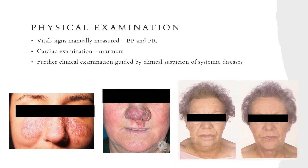Physical examination follows the same train of thought from history taking. I emphasize manually taking the vital signs, as ventricular ectopics can cause erroneous readings, which is factitious bradycardia. Clinical examination is often otherwise unyielding and should be guided by clinical suspicion of systemic diseases. The first picture on the left is a malar rash suggestive of systemic lupus erythematosus. The middle picture is lupus pernio suggestive of sarcoidosis. The last two pictures on the right show hypothyroidism — myxedema facies with a dull, puffy facial expression, dry skin, periorbital swelling, and hair that is dry, coarse, and sparse — and the rightmost picture shows the appearance following treatment with thyroxine.